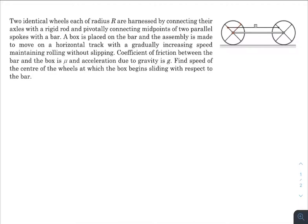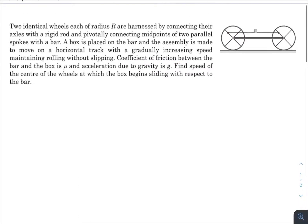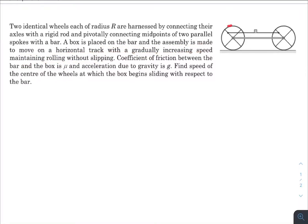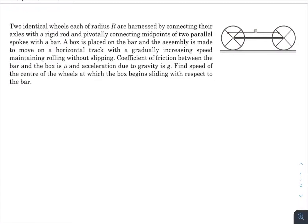A box is placed on the bar and the assembly is made to move on a horizontal track with a gradually increasing speed, maintaining rolling without slipping. So the whole assembly is moving with a speed that is gradually increasing — no slipping, only pure rolling. The coefficient of friction between the bar and the box is μ, and acceleration due to gravity is g. Find the speed of the center of the wheels at which the box begins sliding with respect to the bar.